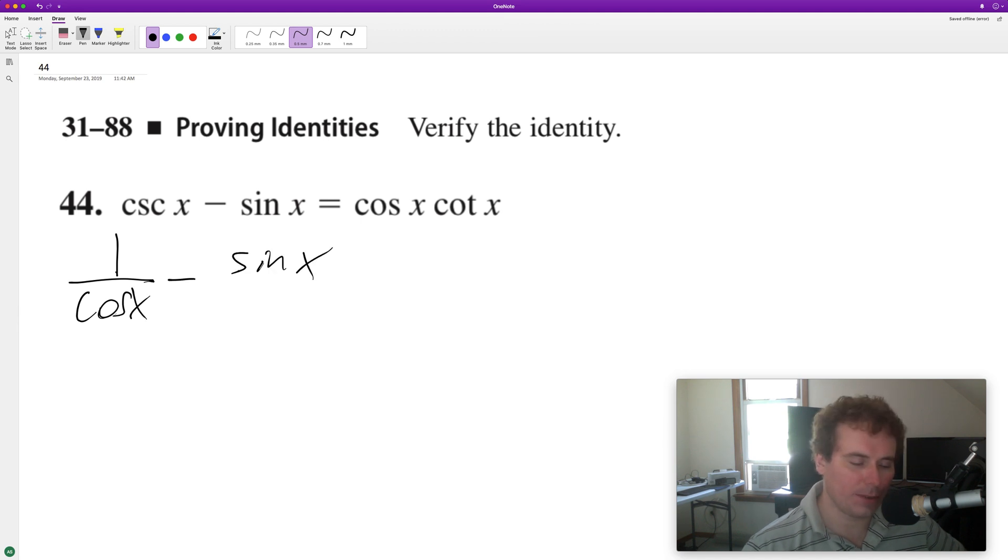Now what we can do is get a common denominator. We'll get cosine, so we'll have 1 minus sine x cosine x all over cosine x.